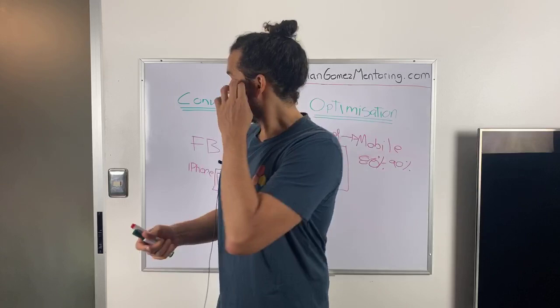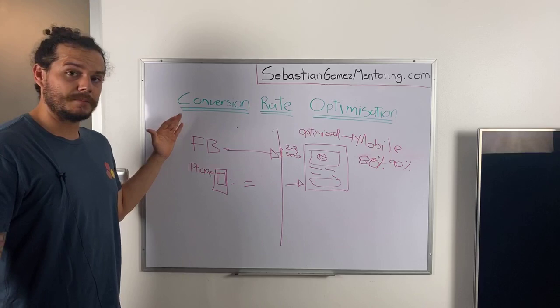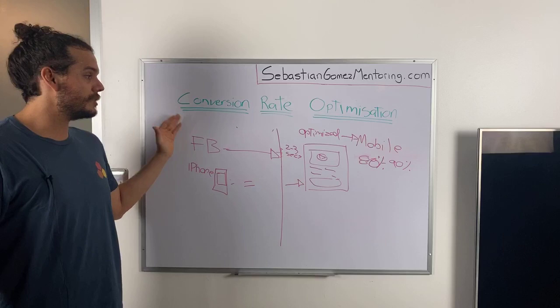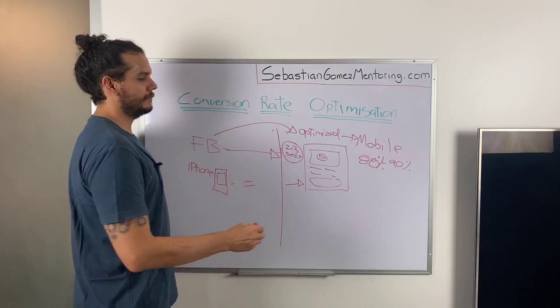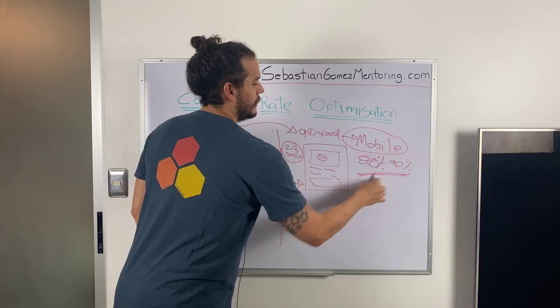From a Facebook ad — whether it's an image, video, or carousel ad — whenever you're doing Facebook advertising, you need to take into consideration: number one, the time the page loads, and number two, that it is mobile optimized. Because most of your traffic is going to be through that specific placement.